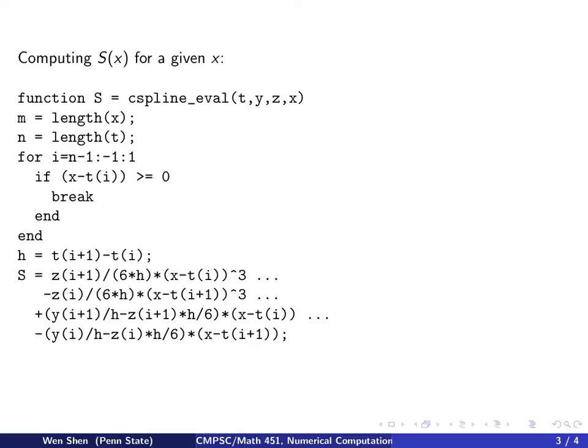So what the program returns to you is the vector of z, which contains all the s double primes at the ti's. Once these zi's are computed, I can use them to find my spline function, s. So this function, cspline_eval, will do the following.